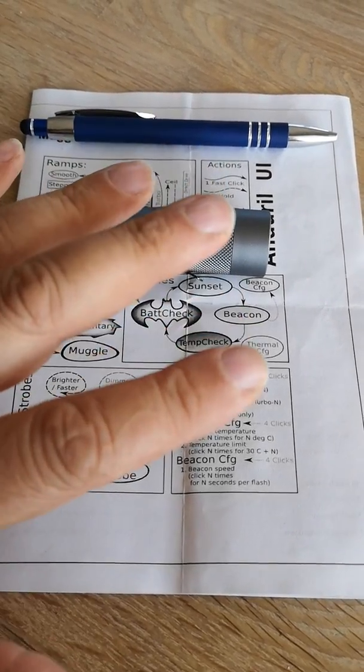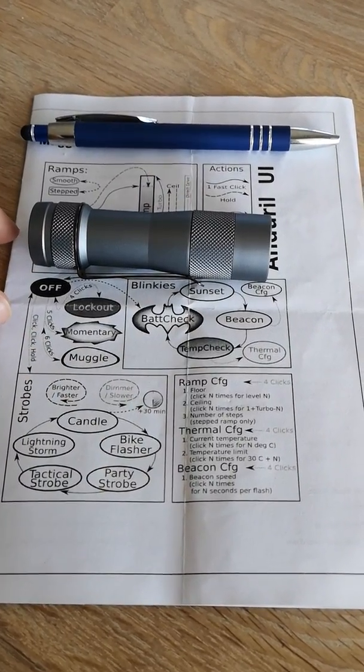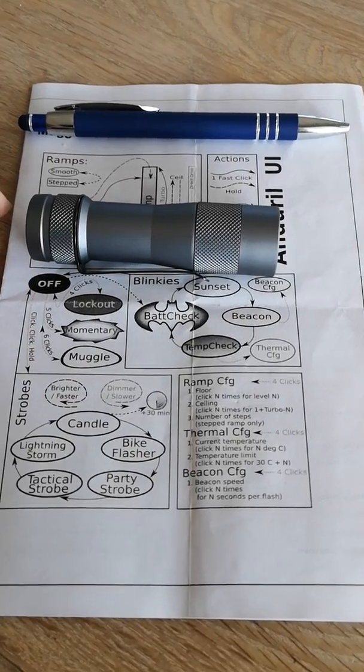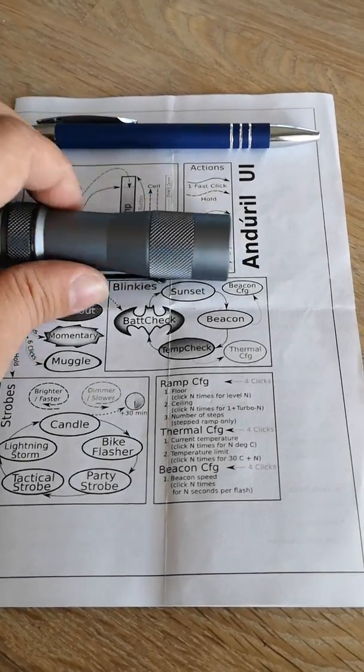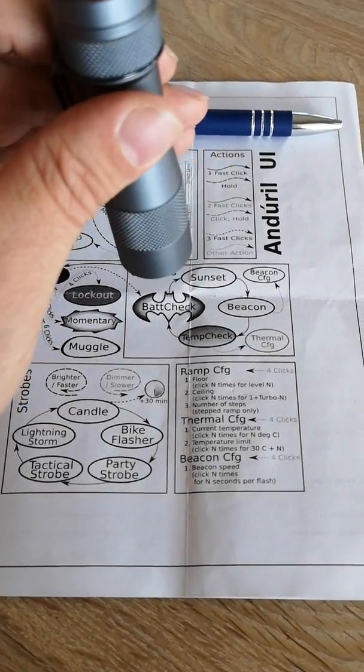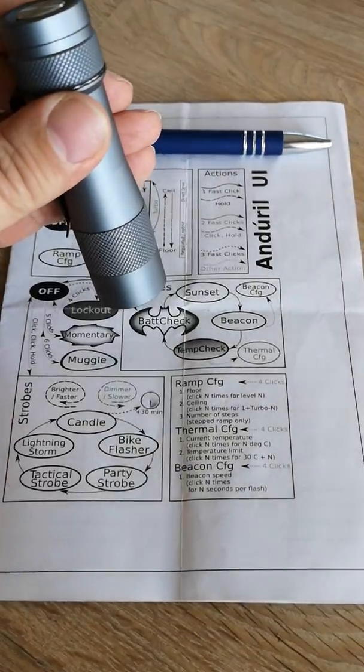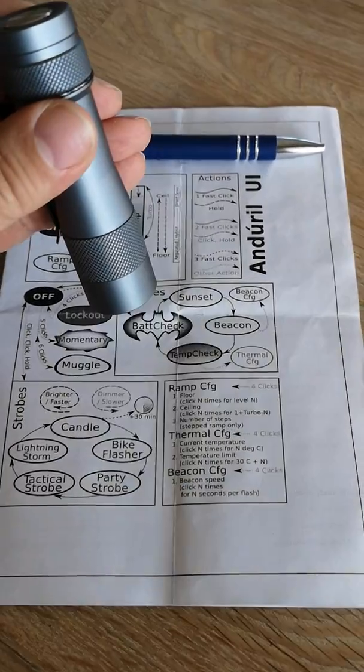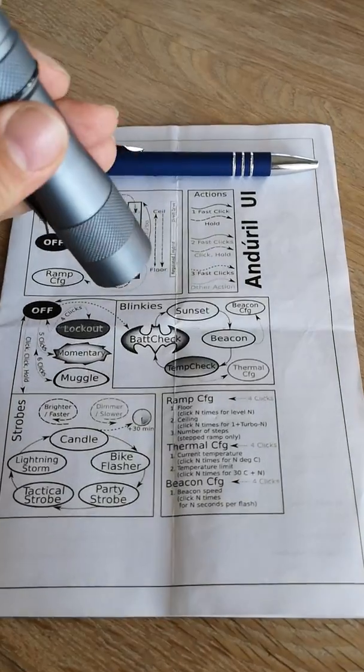And if you just take it slow, you cannot break something. Not really I think. So I recommend what you should do is from off through the triple click. So now it blinks something which is the battery voltage, 3.9 or something in my cell. That's okay. It's good to know we are in battery check.